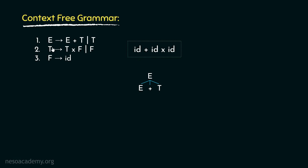So, using the rule e can be rewritten as t, we can derive t from this e. Then again, from t, we can derive f due to the production rule t can be rewritten as f. Now, from the rule f can be rewritten as id, we can derive id from this f. Now, we have derived id and plus — that is, this portion. Now we have to derive the remaining portion.